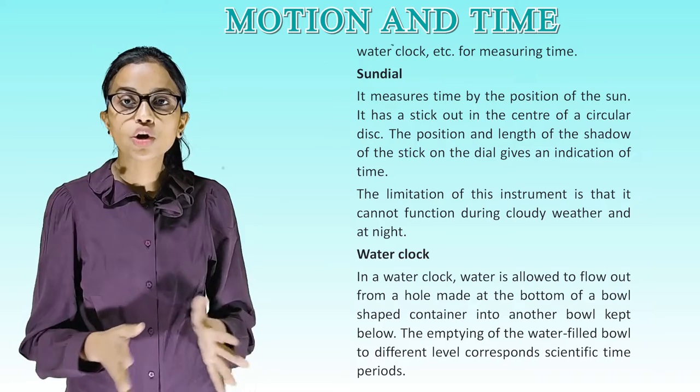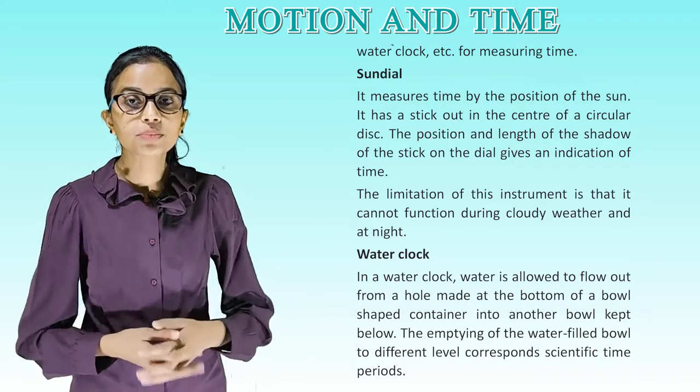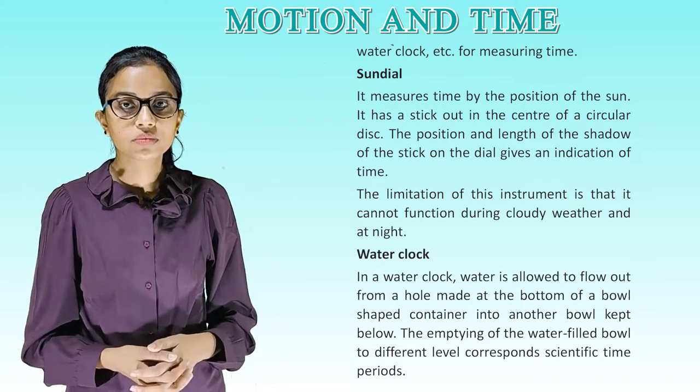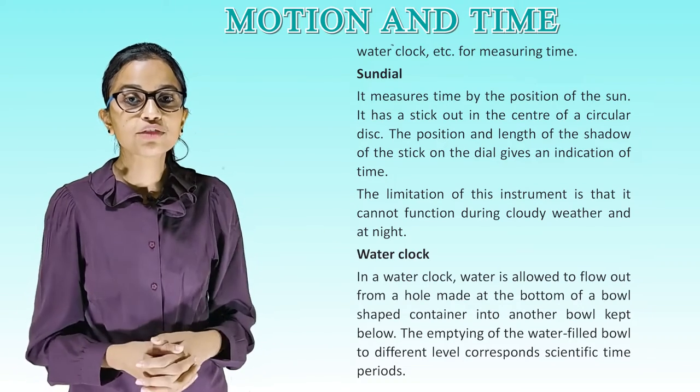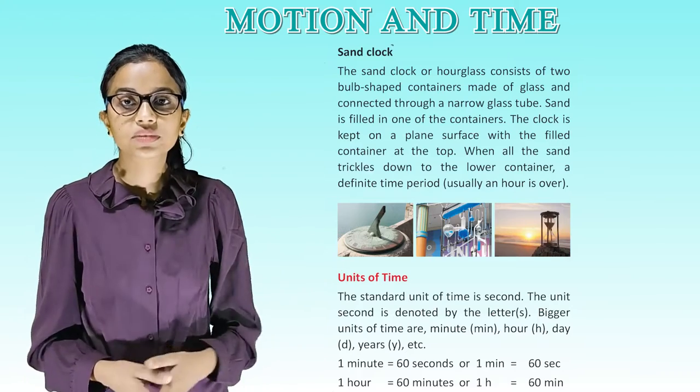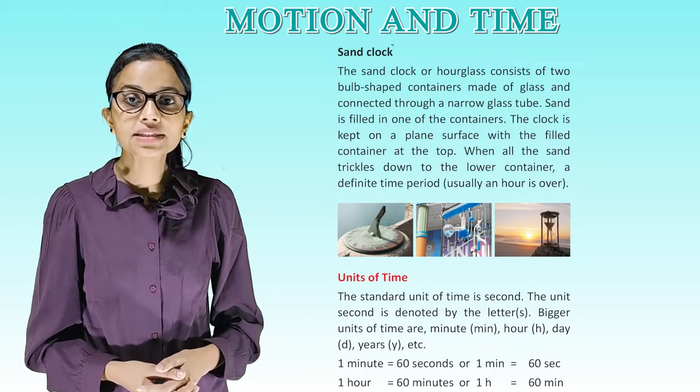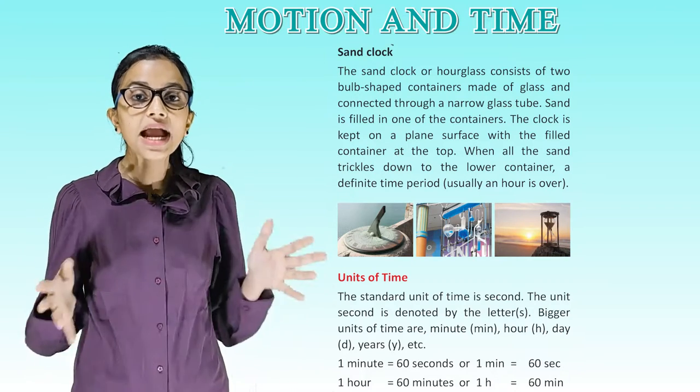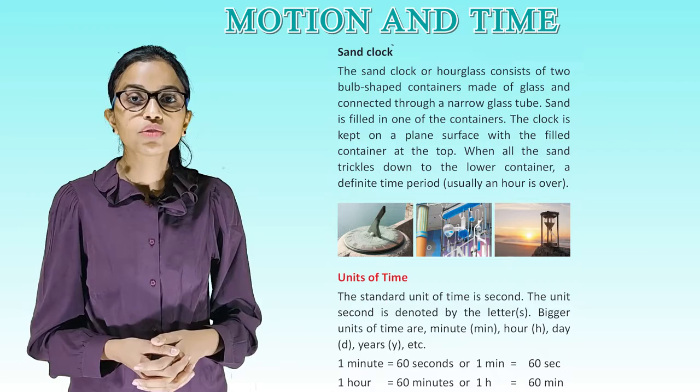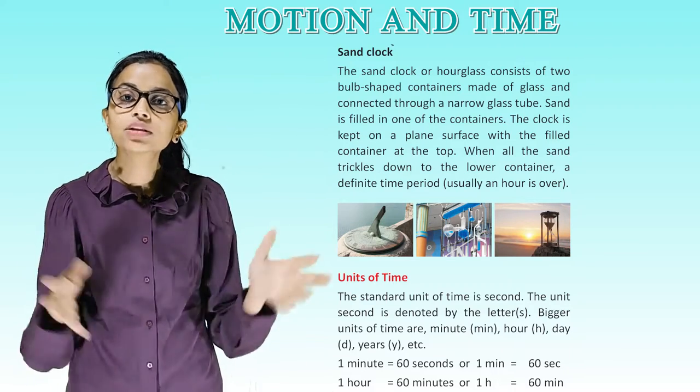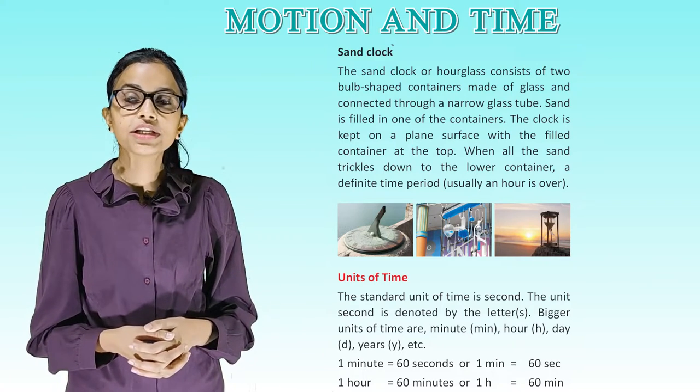Water clock. In a water clock, water is allowed to flow out from a hole made at the bottom of a bowl shaped container into another bowl kept below. The emptying of the water filled bowl to different levels corresponds to specific time periods. Sand clock. The sand clock or hourglass consists of two bulb shaped containers made of glass and connected through a narrow glass tube. Sand is filled in one of the containers. The clock is kept on a plain surface with a filled container at the top. When all the sand trickles down to the lower container at a definite time period, usually an hour is over.